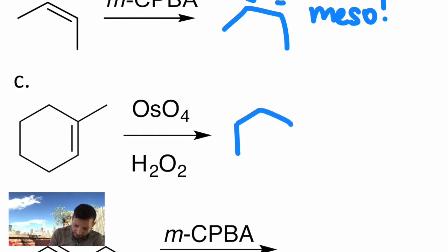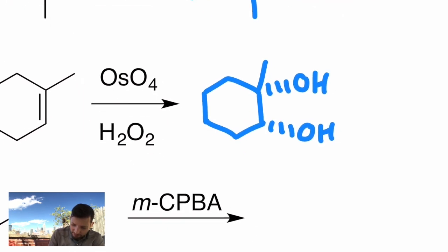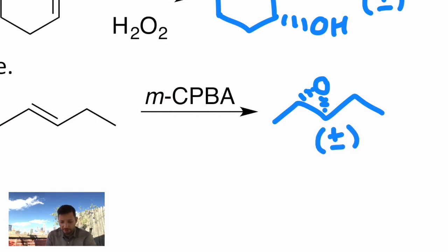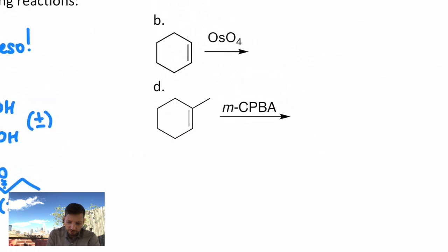The dihydroxylation of methylcyclohexene is going to be very similar to what we saw with the cyclopentene. You get two OHs, both syn to each other, and you can get the racemic mixture. Epoxidation of E would give you an epoxide. I'll show the relative stereochemistry with the oxygen bonded in the same direction on each. That is chiral. It's not meso, so you would have an enantiomer.